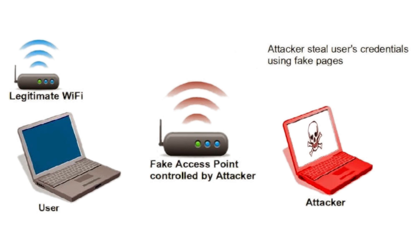The fourth one is the fake Wi-Fi network. If any stranger offers you free internet on your mobile phone, don't access it. Hackers can use your favorite coffee houses or public places to create a fake wireless network. You might think you are connecting to the public Wi-Fi provided by that place, but you are actually entering a malicious network.